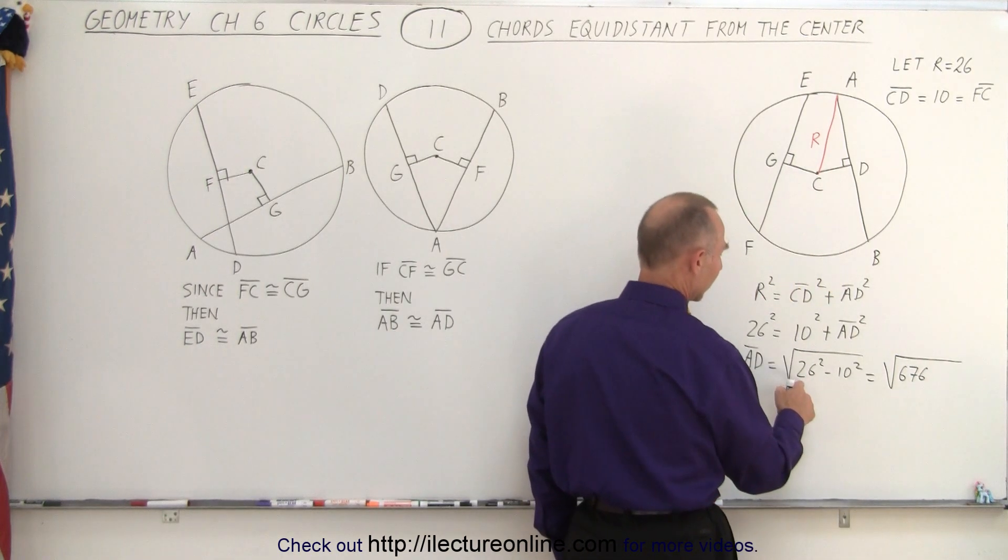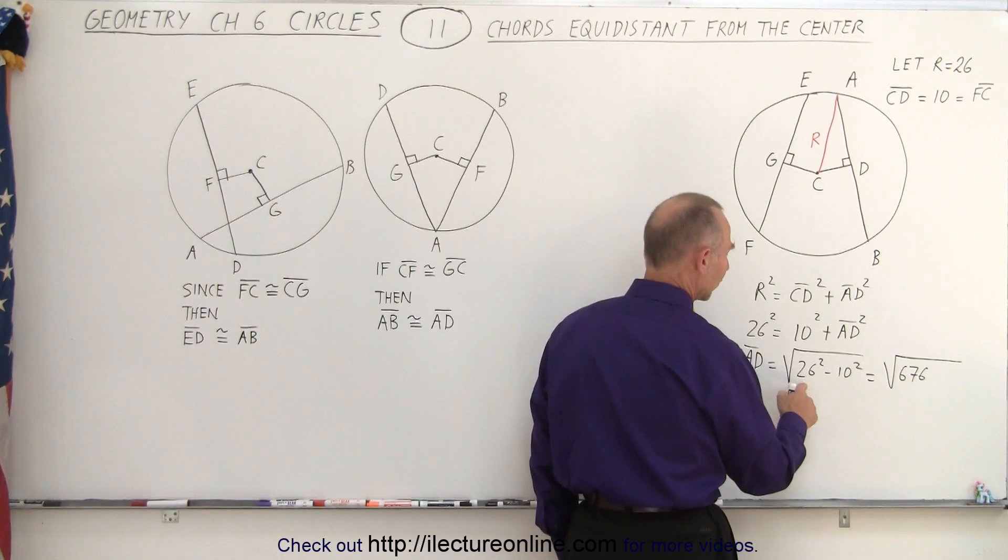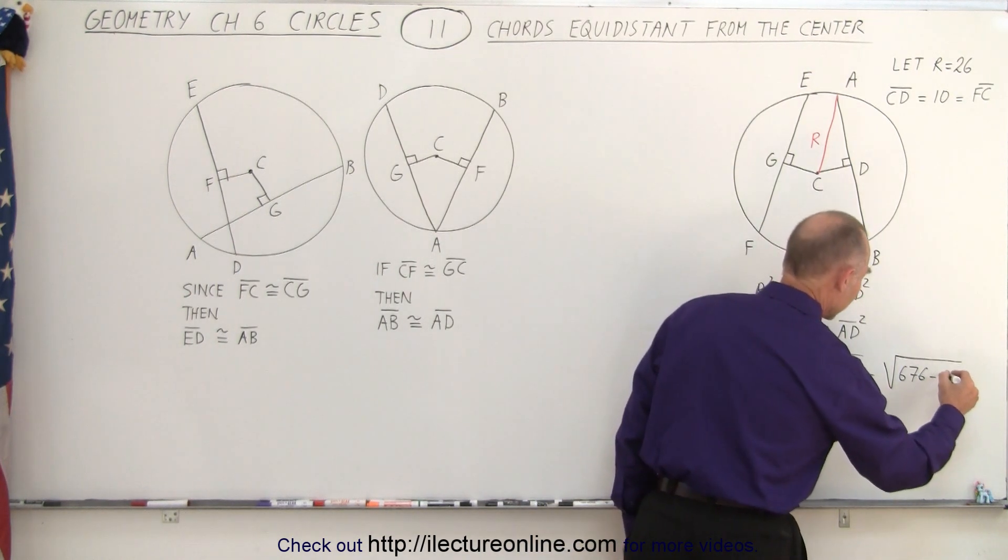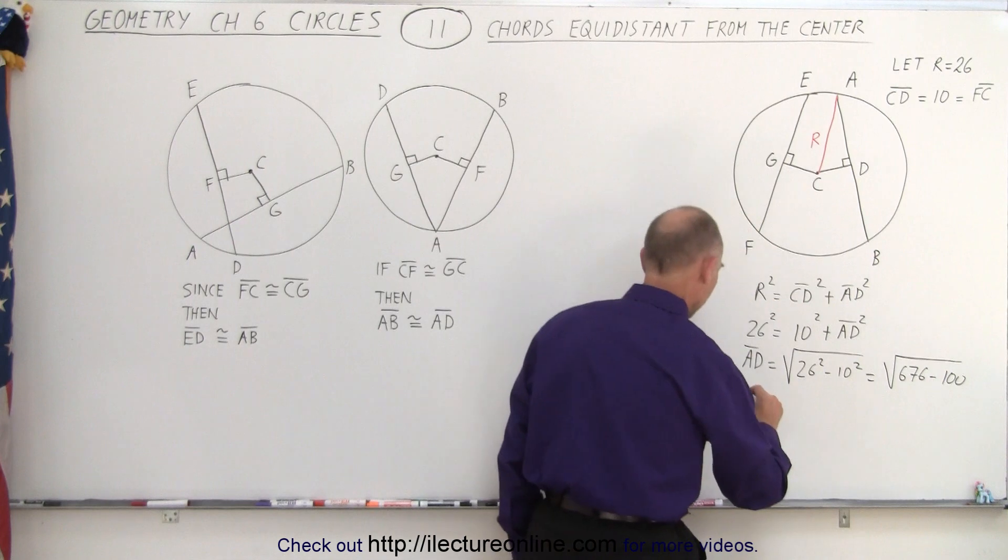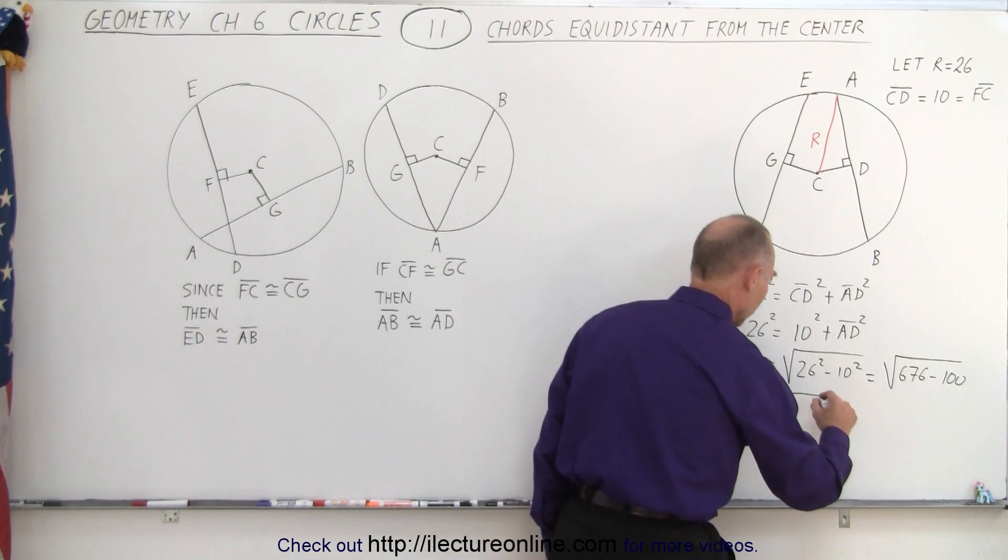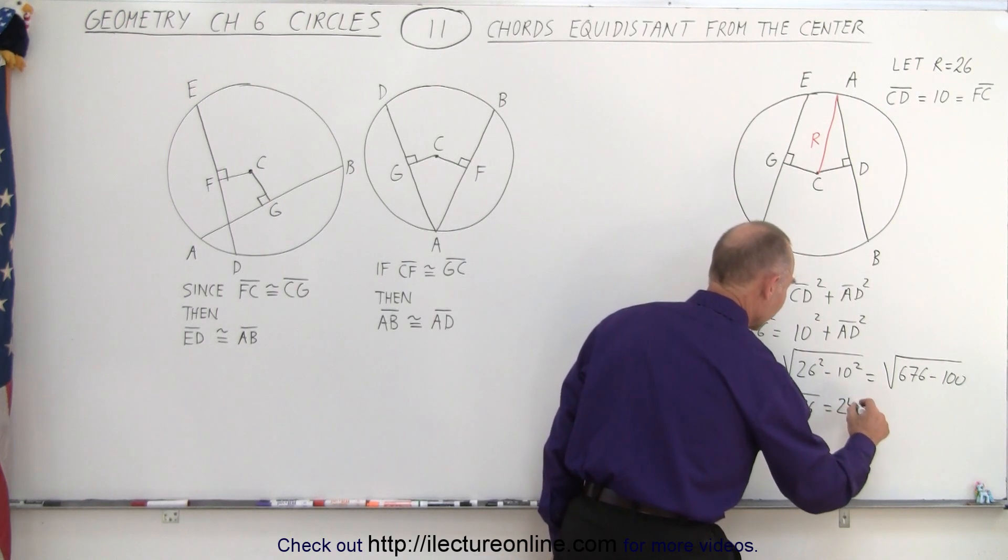Let's see if that's correct. That's 520 that's 640 and 36 that's 676 correct minus 100 and so that means that A to D is equal to the square root of 576 and that happens to be 24.